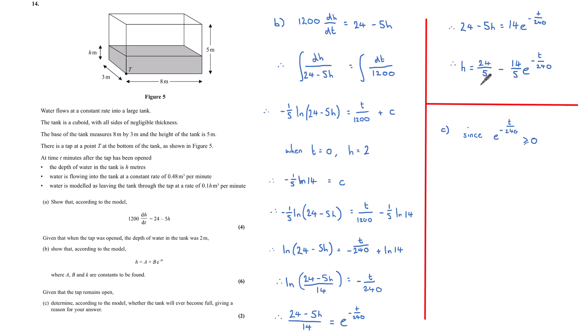Looking at this expression, we've got 24 over 5, which is not quite 5, subtract 14 over 5 lots of e to the minus t over 240. e to the minus t over 240 will always be greater than or equal to 0. Since it is greater than or equal to 0, this means that h is always going to be at least less than 24 fifths. And because 24 fifths is less than 5, this tank will never be full.